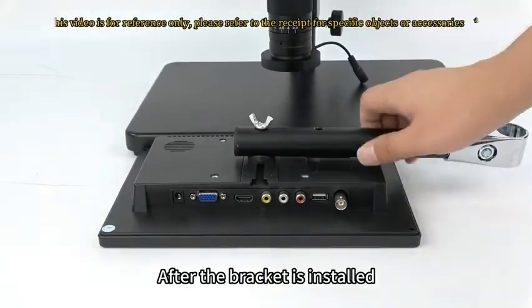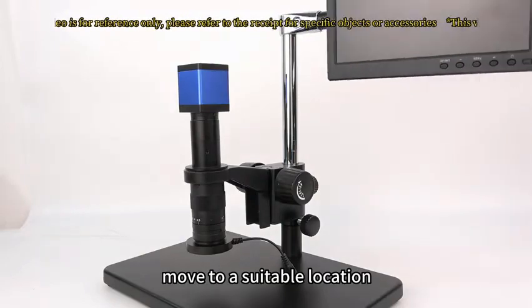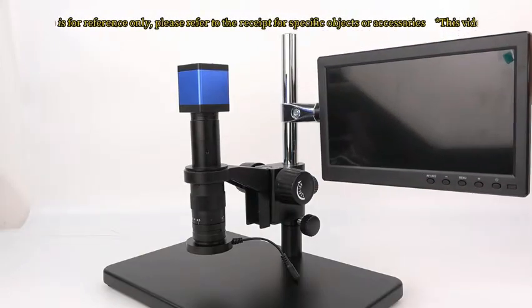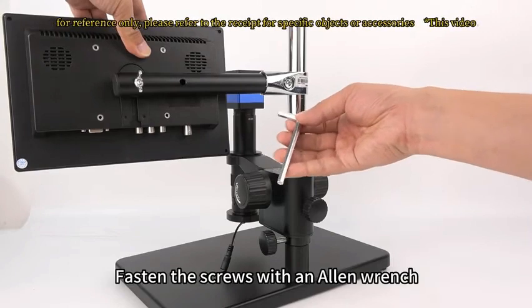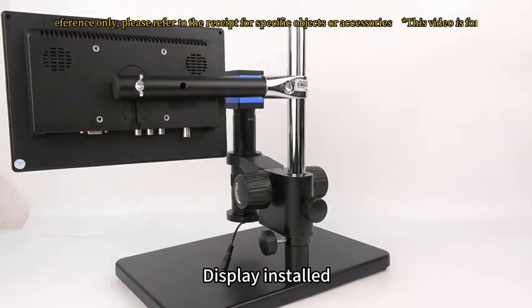After the bracket is installed, the other end is installed on the column. Move to a suitable location. On the back of the stand, fasten the screws with an Allen wrench. Display installed.